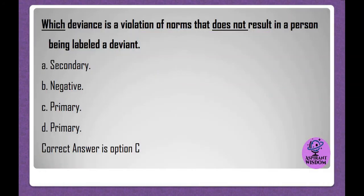Which deviance is a violation of norms that does not result in a person being labeled a deviant? A. Secondary. B. Negative. C. Primary. D. Primary. Correct answer is option C.